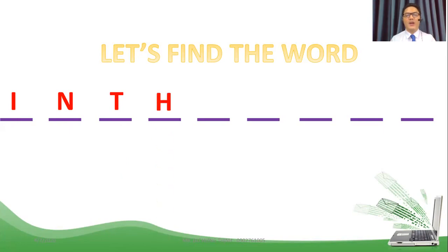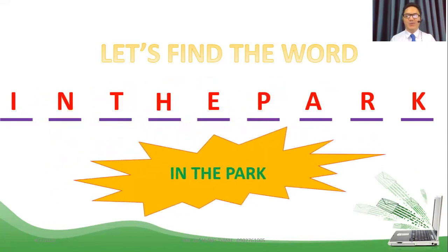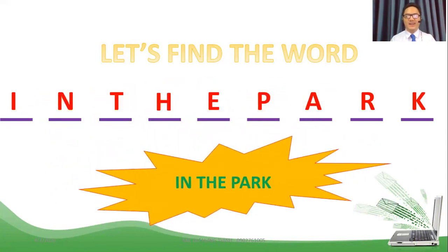That's right — H. And here is the letter E. Four more letters. We have P. This one is A. And here is the letter R. And how about the last one? Of course — K. So students, the word is 'in the park.' So this is also our topic today.